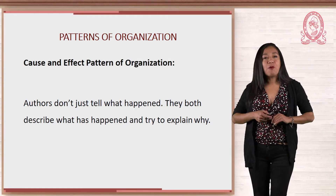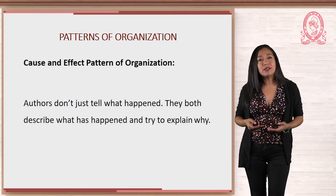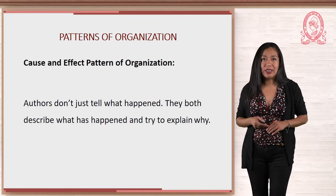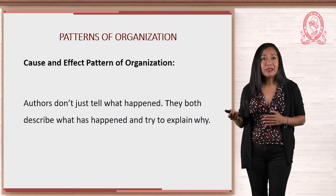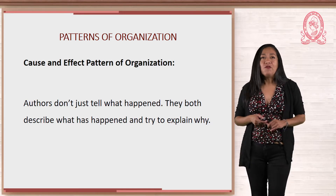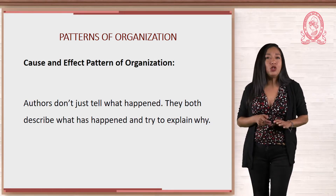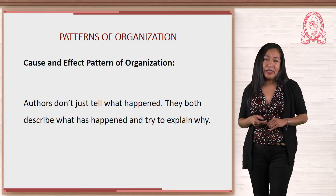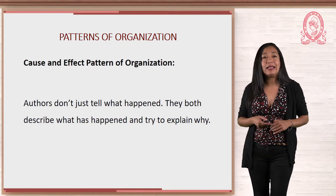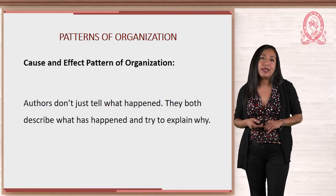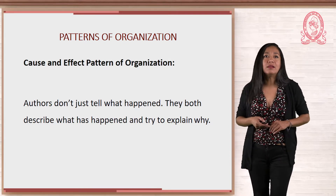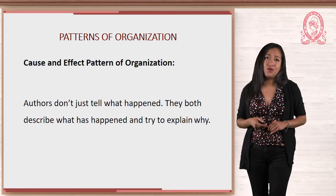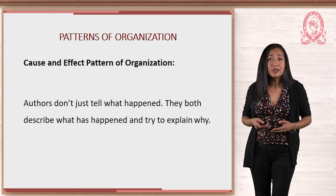Now that we have studied and practiced with cause and effect words, let's continue with the cause and effect pattern. Langan states that authors don't just tell what happened — they both describe what has happened and try to explain why. For example, a sociology textbook would not just say that the test scores of American students have declined for most of the last 30 years; the book would also explain the likely reasons why this decline has taken place. Or a health textbook would not just describe the ways that medical care has changed in the last few years — it would also examine the causes of such changes.